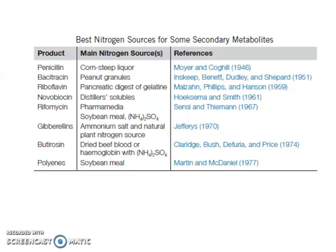This table mentions different products and their main nitrogen sources. For example, the best nitrogen source for a secondary metabolite like vincristine is cottonseed or peanut granules, and for bacitracin similarly. I hope you understand the nitrogen source topic. If you have any queries, you can contact me. We will see you in the next class — thank you.